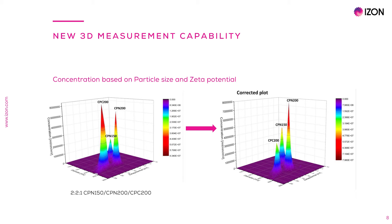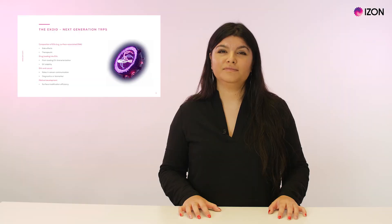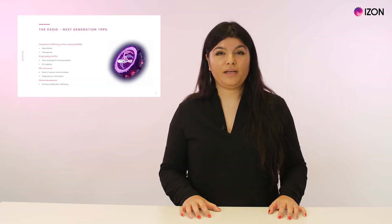However, after data analysis correction, the bare polystyrene CPN-150 and CPN-200 proportions outweigh the CPC-200 proportion of the mix, as expected for the nominal values.